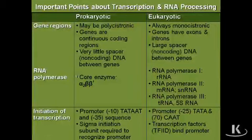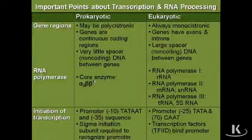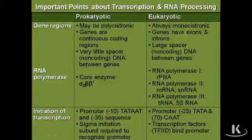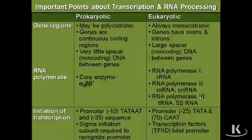As far as RNA polymerases go, in prokaryotes the core enzyme is alpha-2-beta-beta prime — that's what transcribes prokaryotic DNA into messenger RNA, ribosomal RNA, or transfer RNA. In eukaryotes, we have at least three distinct RNA polymerases. RNA polymerase 1 makes ribosomal RNA. RNA polymerase 2 makes messenger RNA and also the small nuclear RNA involved in splicing. RNA polymerase 3 makes transfer RNA and the 5S ribosomal RNA.